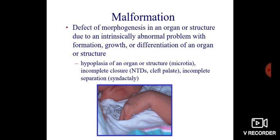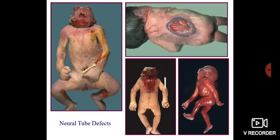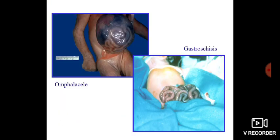Malformation is a defect of morphogenesis in an organ or structure due to an intrinsically abnormal problem with formation, growth, or differentiation of an organ or structure. Examples include microtia, neural tube defect, cleft palate, syndactyly, and sirenomelia.